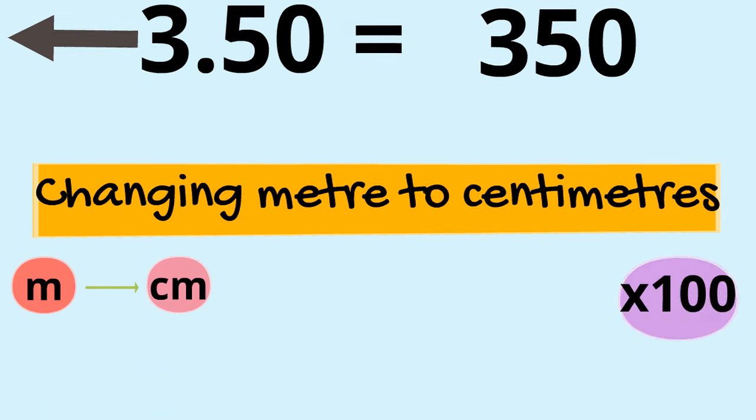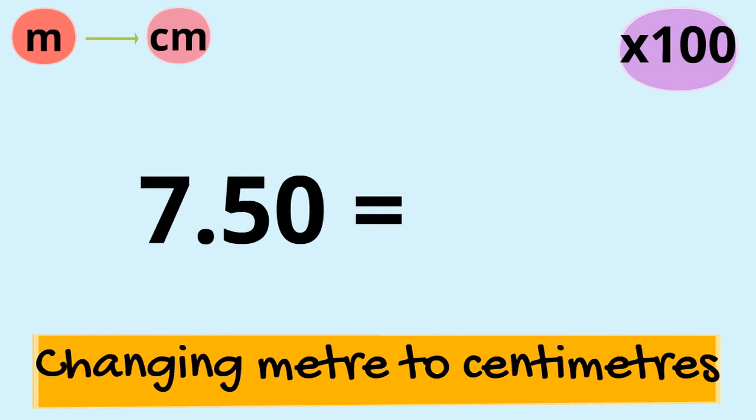So now that you know that, can you change 7.50 meters into centimeters for me? Pause the video and give it a try. Well, when we multiply 7.50 by 100, we move everything two places to the left. So our answer is 750 centimeters. Not too bad.